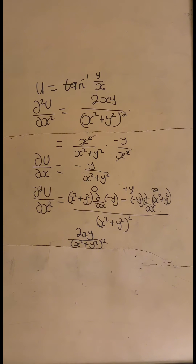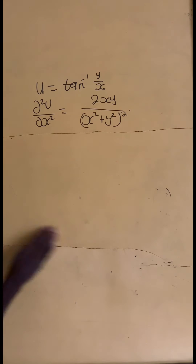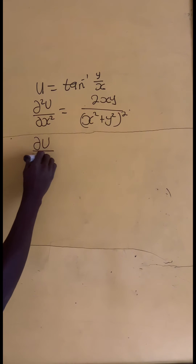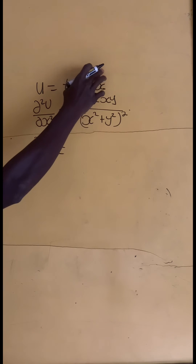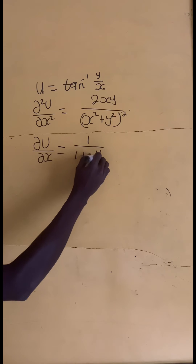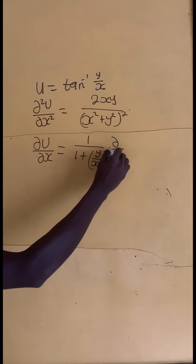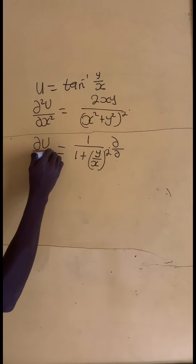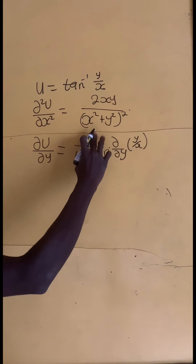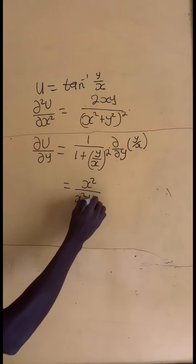So that is our del squared u on del x squared. Now let's find the partial derivative of u with respect to y. In this case, we differentiate the tangent inverse, which gives us 1 divided by 1 plus the angle y on x, squared, times the partial derivative of y on x with respect to y. When we simplify, we first get x squared divided by x squared plus y squared.